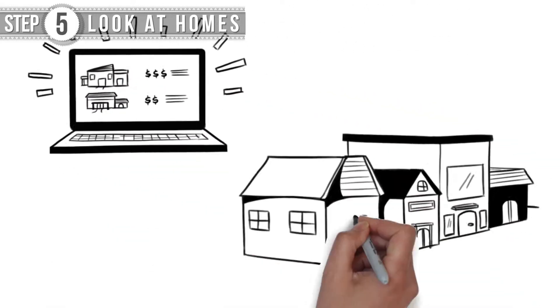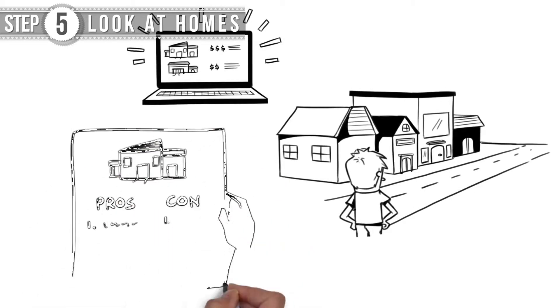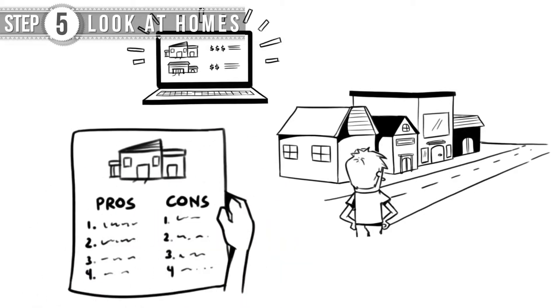Step 5. View as many homes as possible online and in person. Make a list of things you want and don't want in a home.